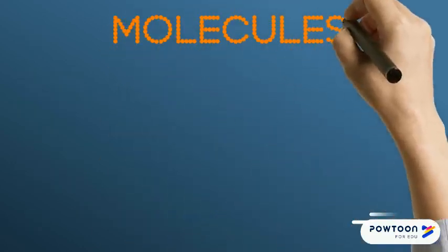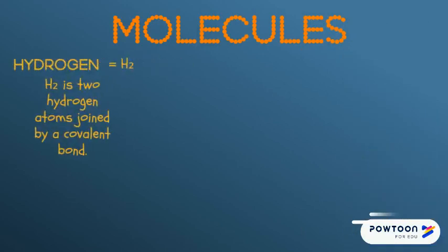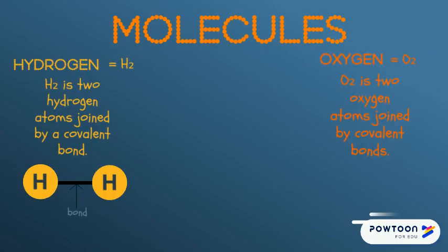Let's take a closer look at a couple of molecules. The hydrogen molecule H2 is when two hydrogen atoms have been joined by a covalent bond. The oxygen molecule O2 is when two oxygen atoms have been joined by up to two covalent bonds.